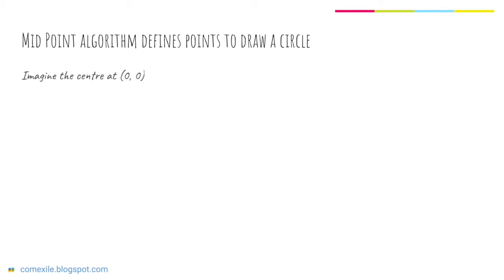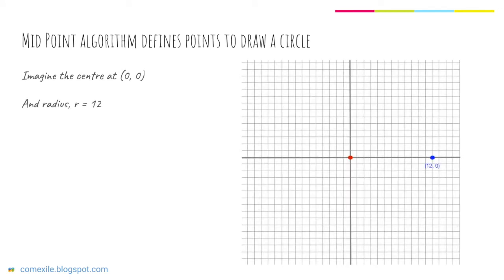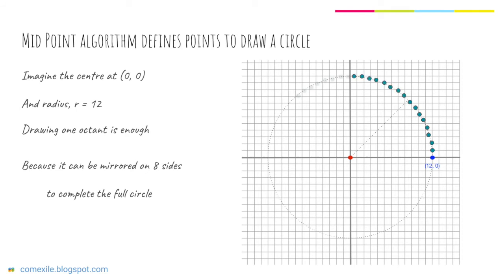For this case let's imagine the center is at (0,0) coordinates and for this example let's say the radius is 12. One thing to note here is that drawing one octant is enough because it can be simply mirrored on each side to complete the full circle.